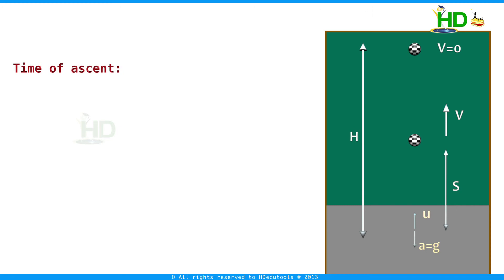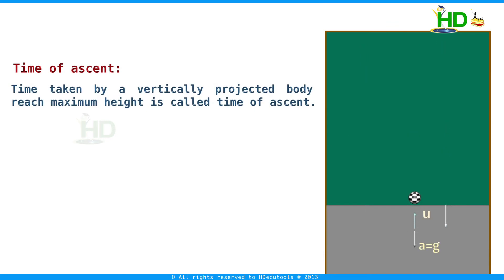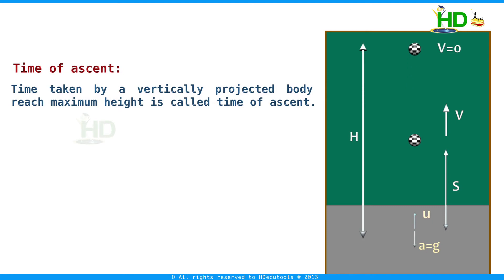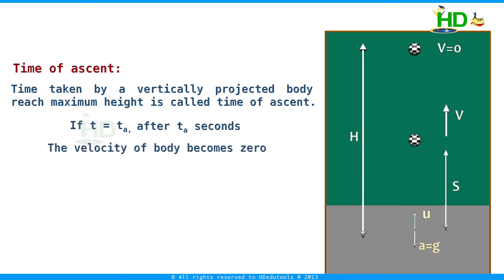Time of ascent is the time taken by a vertically projected body to reach maximum height. Let the time of ascent be t_a. After t_a seconds the velocity becomes zero. Using v equal to u minus g·t_a and setting v equal to 0: 0 equals u minus g·t_a. Therefore, the time of ascent t_a equals u divided by g.